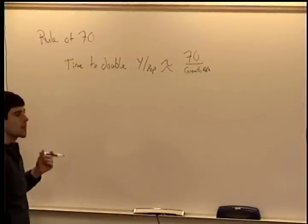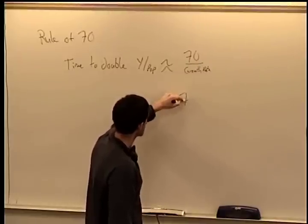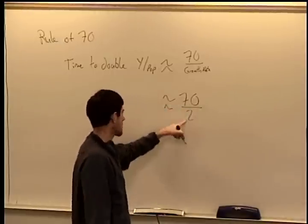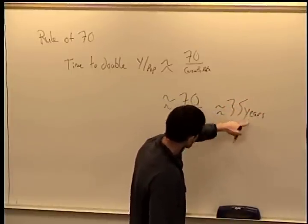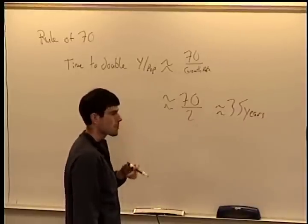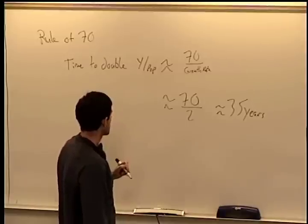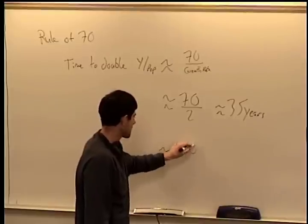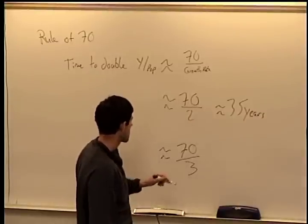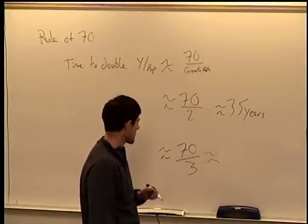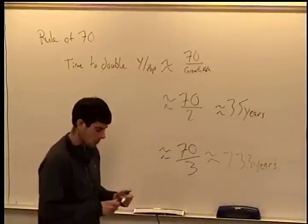If our economy grows at 2% per year, the time to double is approximately 70 divided by 2, which is 35 years — just over a generation. However, if the economy is growing at 3% per year, the time to double is approximately 70 divided by 3, which is about 23.3 years.